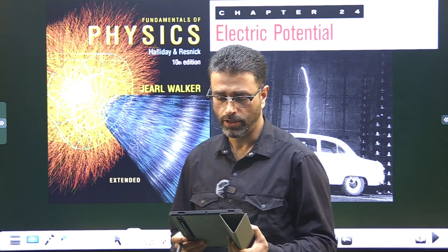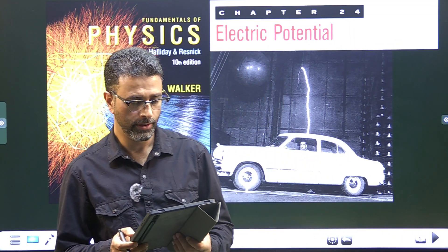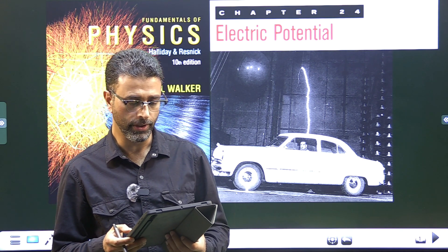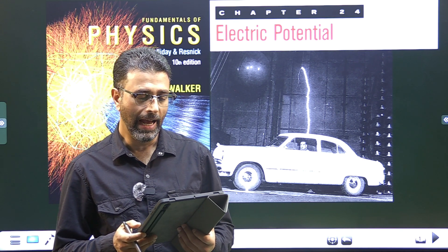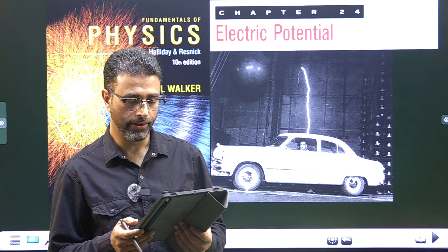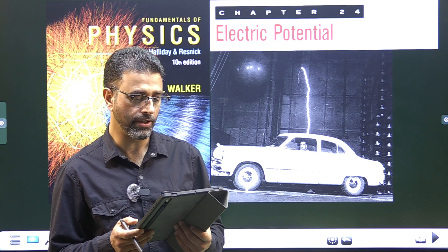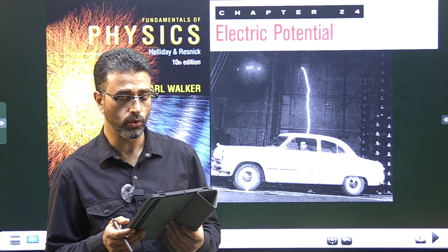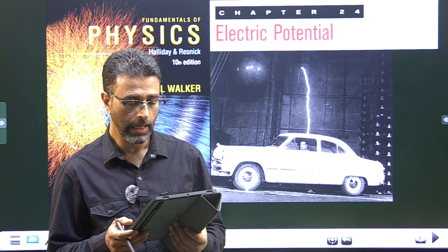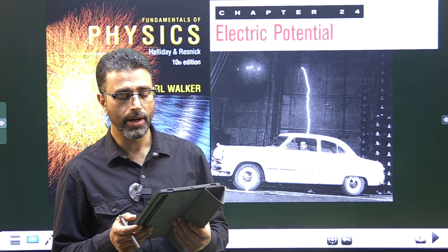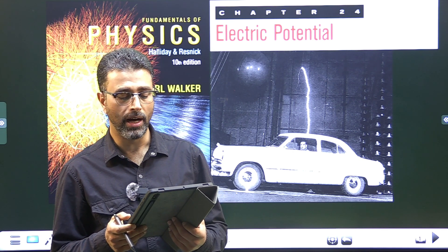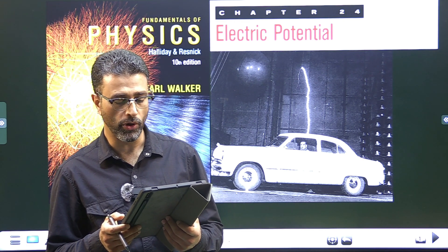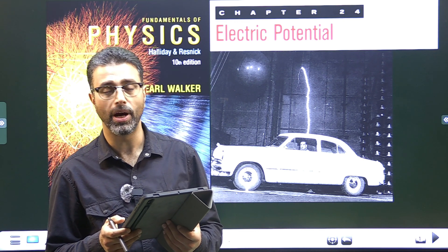Hey guys, Asalaamu alaikum wa rahmatullah. Problem number 5, chapter 24, electric potential. An infinite non-conducting sheet has a surface charge density sigma equal to 0.10 micro coulomb per meter squared on one side. How far apart are equipotential surfaces whose potentials differ by 50 volts?